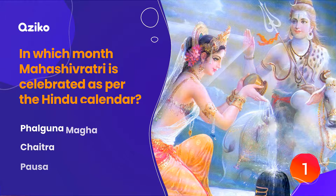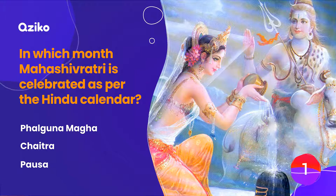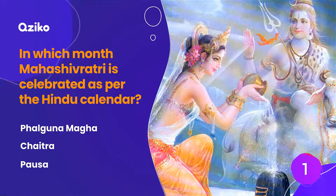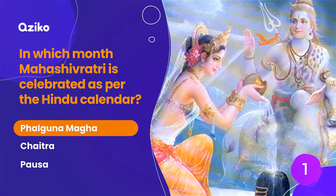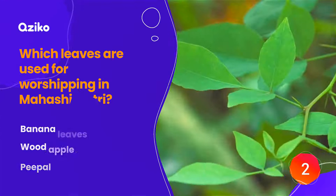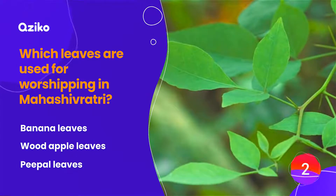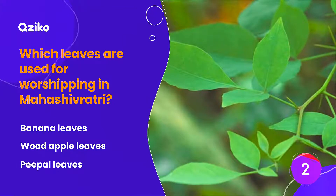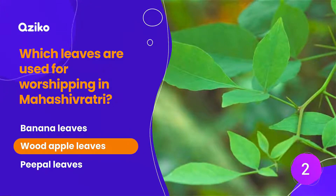In which month is Mahashivratri celebrated as per the Hindu calendar? The right answer is Falgun Magh. Which leaves are used for worshipping in Mahashivratri? The right answer is wood apple leaves.